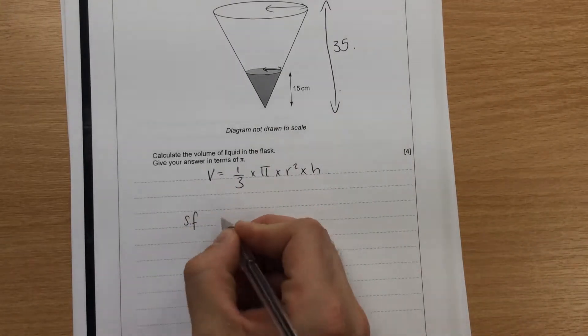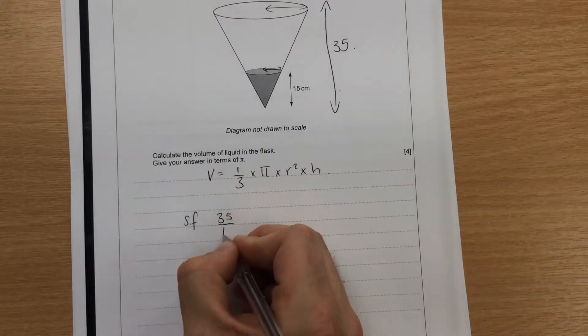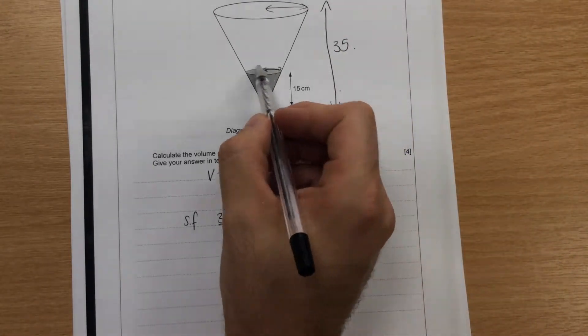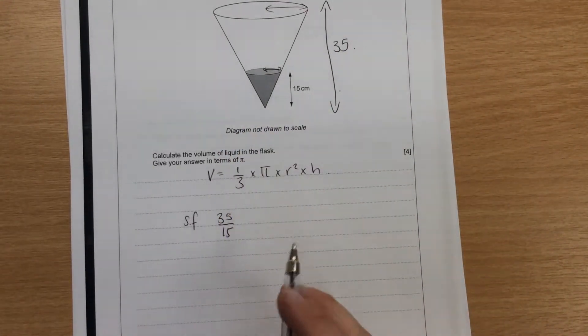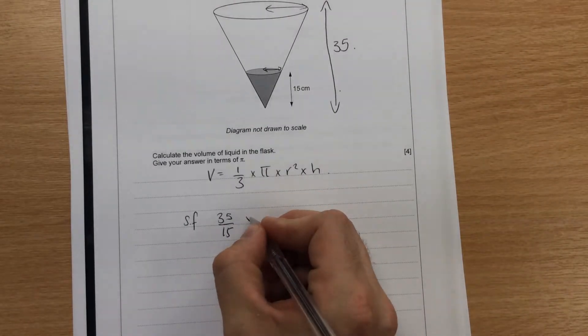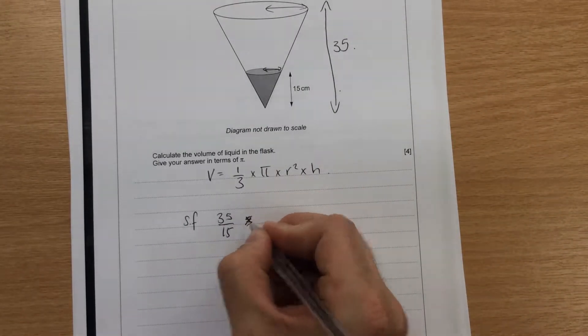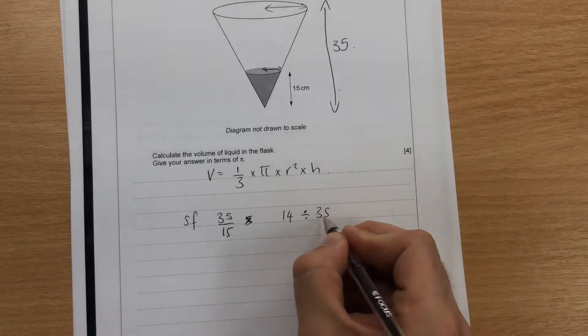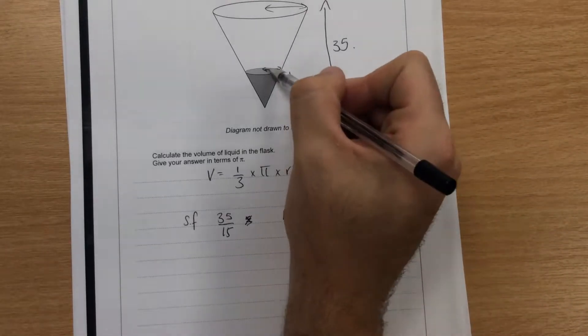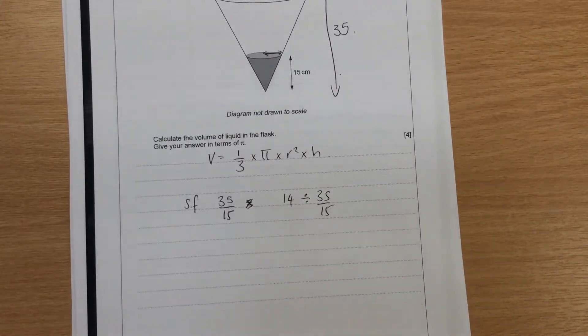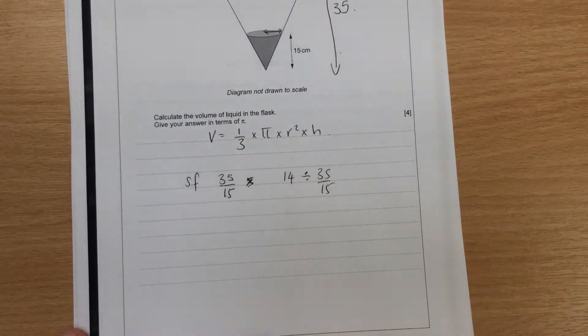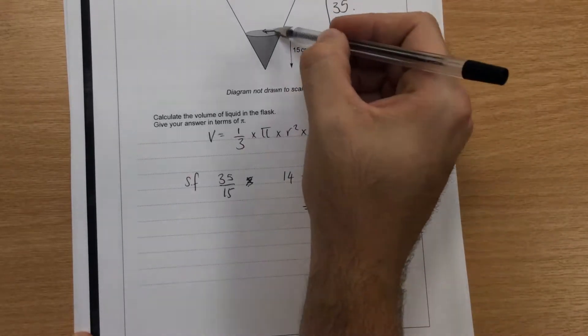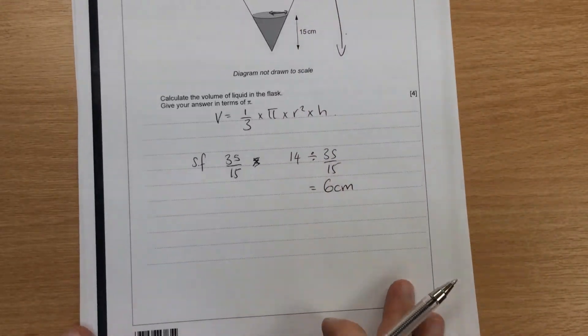So we know that the scale factor is going to be 35 divided by 15. That's going to be the link between the whole one, and if we imagine this being its own little small one, and then we're going to do 14 divided by that scale factor, and then that will tell us the radius of the smaller cylinder. That radius of the smaller cylinder is going to give you 6 centimetres. So we know that the radius in here is 6 centimetres.